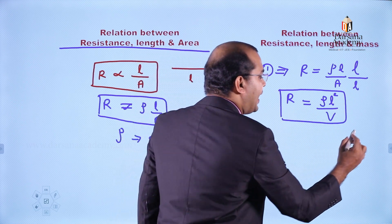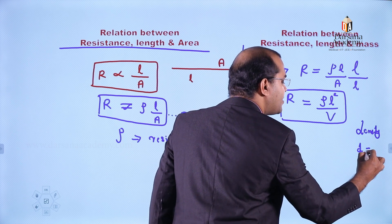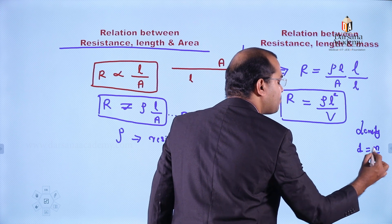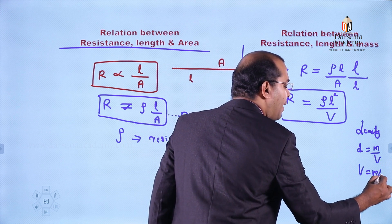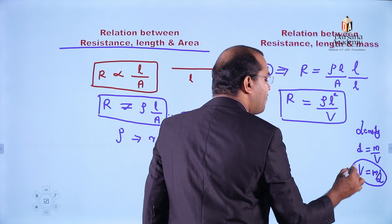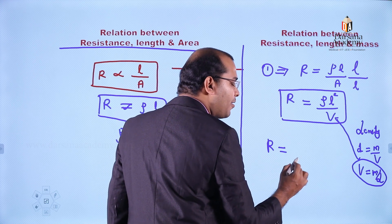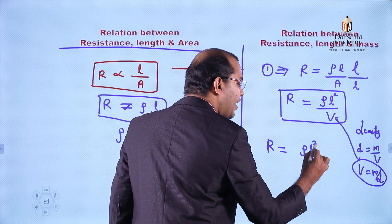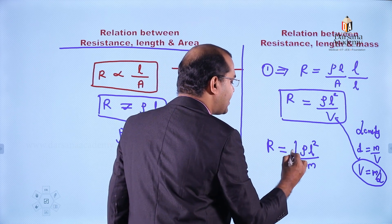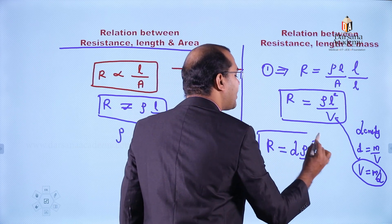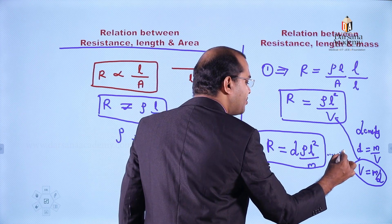We know the density of the material. Density D is defined as mass divided by volume, so volume equals mass divided by density. Substituting, resistance R equals ρL² divided by (M/D), which gives R equals DρL² divided by M. This is equation number 2.